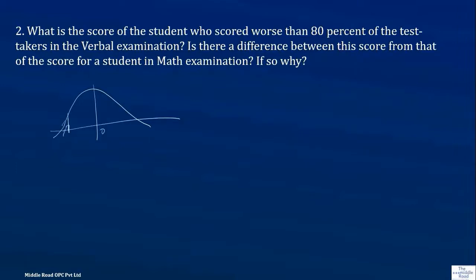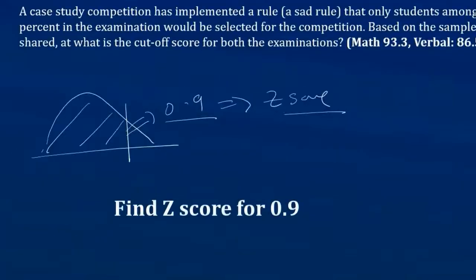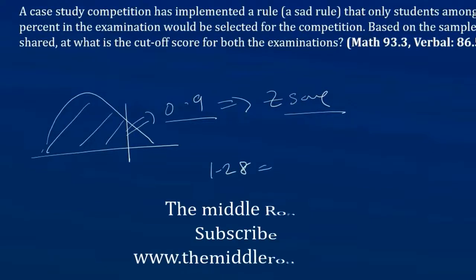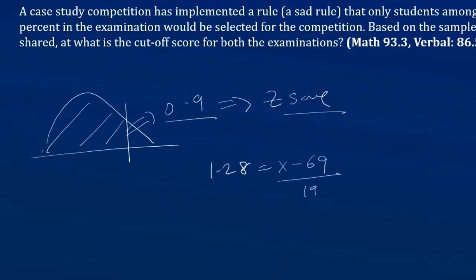You need to calculate the Z-score for 0.2. The Z-score of 0.2 is -0.84 when referring to the normal probability chart. We calculate the Z-score as 1.28, which corresponds to 0.9. Then you substitute: Z = (X - 69) / 19. Multiply this and you get 24.32.